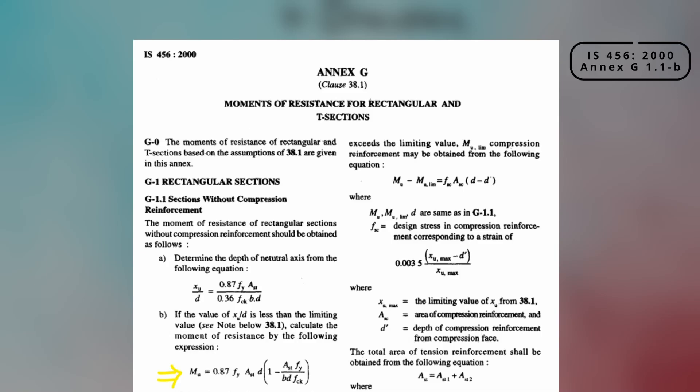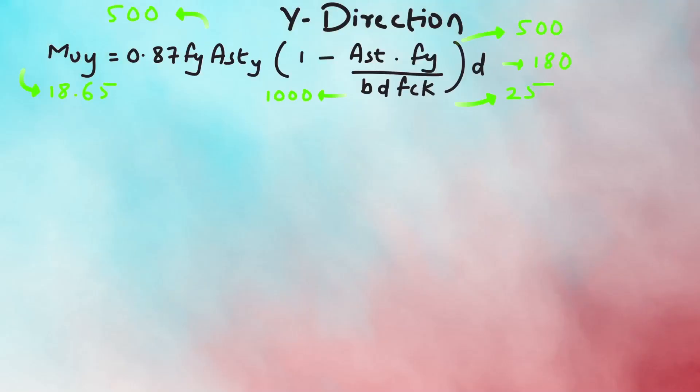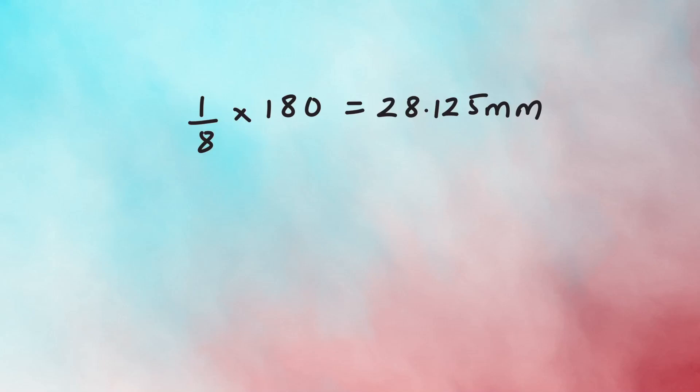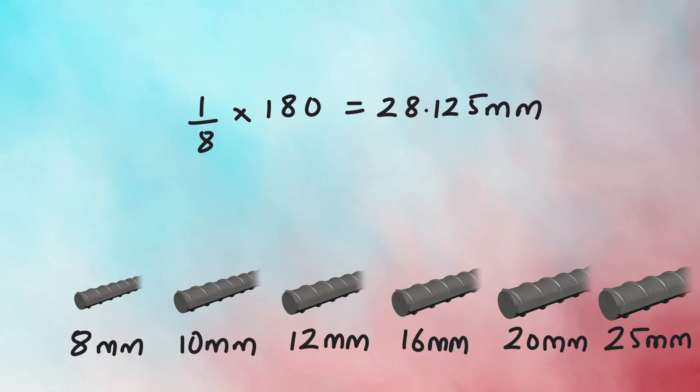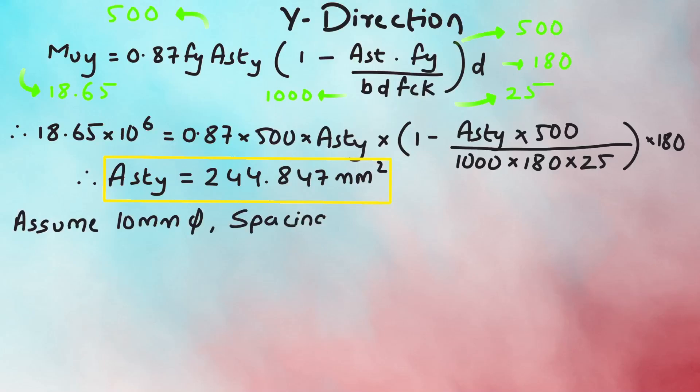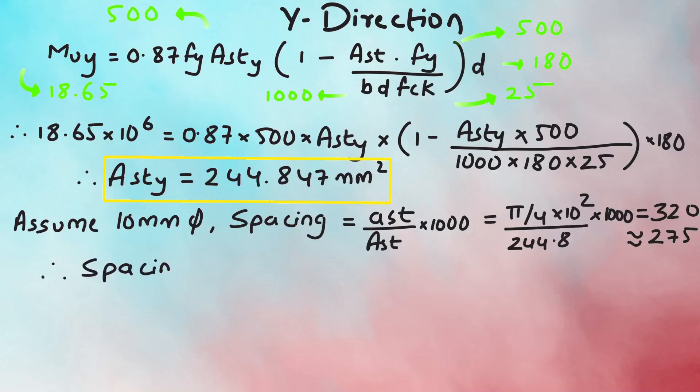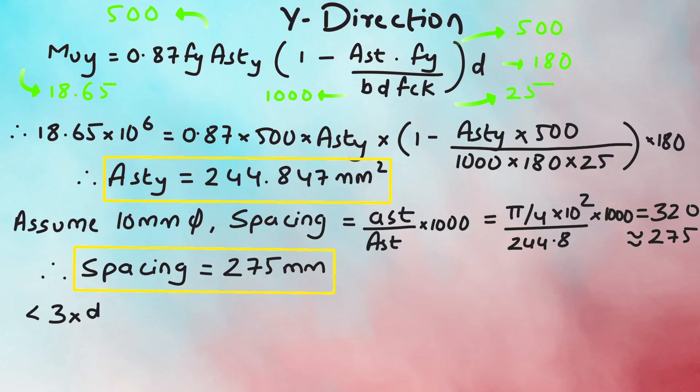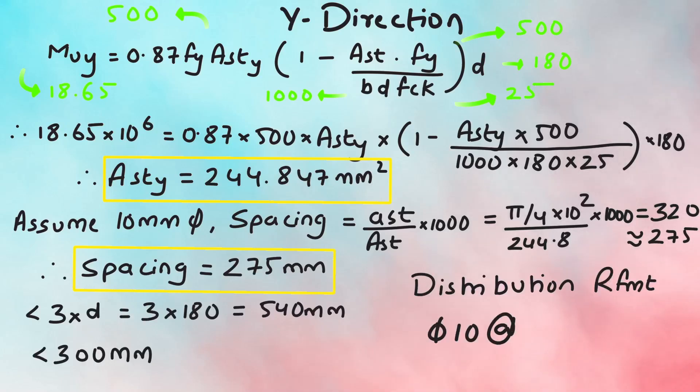Next, area of steel for Y direction is calculated using the same formula as per Annex G 1.1B. All these values are known except Ast Y. So, substituting the values and solving for Ast Y gives the total area required as 244.847 mm square for a unit span of 1 meter. Again, as per the same clause the maximum diameter of bar will be 28.125mm and we will calculate spacing using 10mm bars. Substituting the value gives the spacing of 320mm but we will limit the spacing to 275mm. Since when we check for spacing as per clause 26.3.3B the main reinforcement bars shall be not more than three times the effective depth of solid slab or 300mm whichever is smaller. Hence, the reinforcement in Y direction is designed as tor 10 at 275mm center to center.